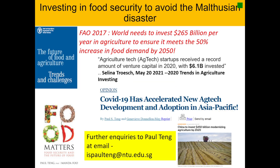Investing in food security helps us avoid any potential Malthusian disasters — where population growth exceeds food production. The Food and Agriculture Organization of the UN has estimated that the world needs to invest $265 billion per year in agriculture to ensure it meets the increase in food demand by 2050. We have certainly seen in many countries these last two years, with COVID-19, how the pandemic has accelerated new ag-tech development and adoption in Asia-Pacific and increased appreciation for food security. I would hope that this mindset change will also apply to the Korean Peninsula. Thank you very much for listening to this short presentation.